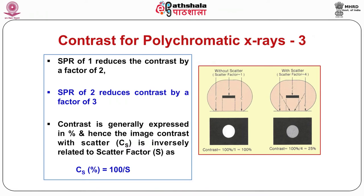The SPR depends on the area of the field that is field of view, the thickness of the patient, and the energy of the X-rays. The contrast is generally expressed in terms of percentage, and hence image contrast with scatter, CS, is inversely related to the scatter factor SF and can be given by: CS percentage equals 100 divided by SF.